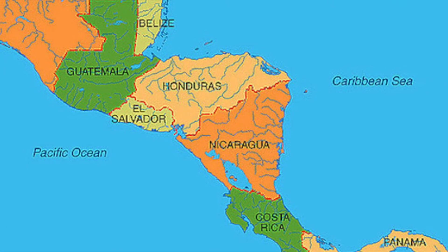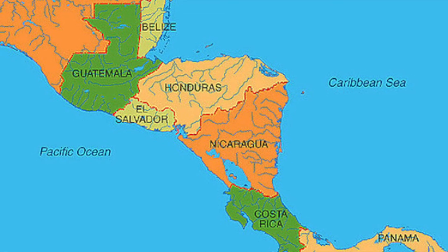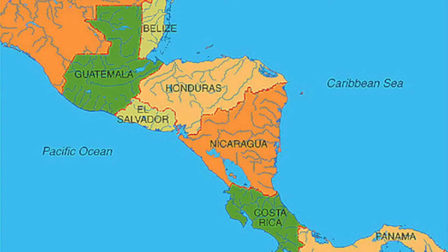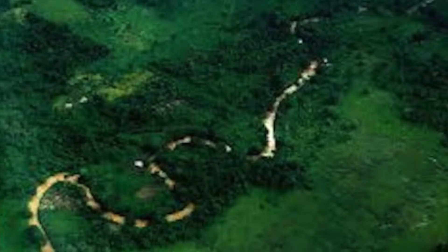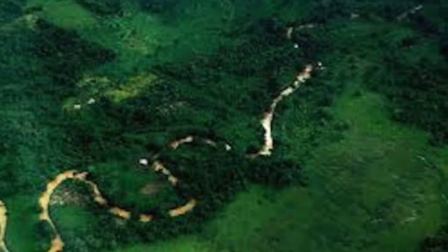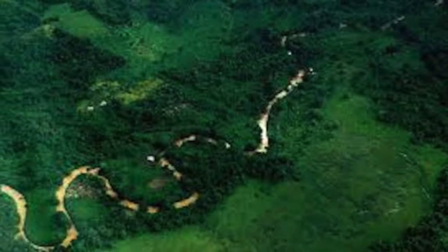Costa Rica, El Salvador, Guatemala, Honduras, Nicaragua, and Panama. This is an image of the Patuco River in northeastern Honduras and it is a main source of communication and transport.